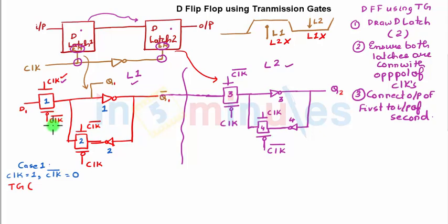At the same time, clock bar is zero so this is on. So transmission gate one is on. At the same time, clock is one so this PMOS is off, clock bar is zero so NMOS is off. Transmission gate two is going to be off. These are my on transmission gates, these are my off transmission gates.